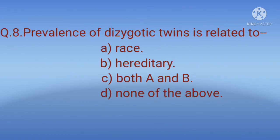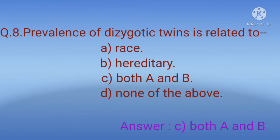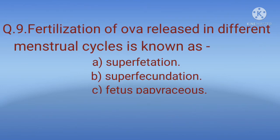Question 8: Prevalence of dizygotic twins is related to? Options: A) Race, B) Hereditary, C) Both A and B, D) None of the above. The correct option is C, both A and B. Regarding race: frequency is highest amongst Negroes, lowest amongst Mongols, and intermediate amongst Caucasians. Regarding hereditary: there is a hereditary predisposition likely transmitted through the female/maternal side. Advancing maternal age is also a cause; maximum twinning incidence is between ages 30 and 35 years, markedly reduced thereafter.